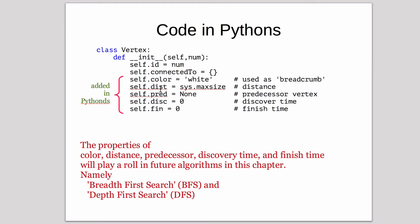It uses these attributes for different algorithms: color, distance, predecessor, discovery time, and finish time. We'll talk about that at later times.